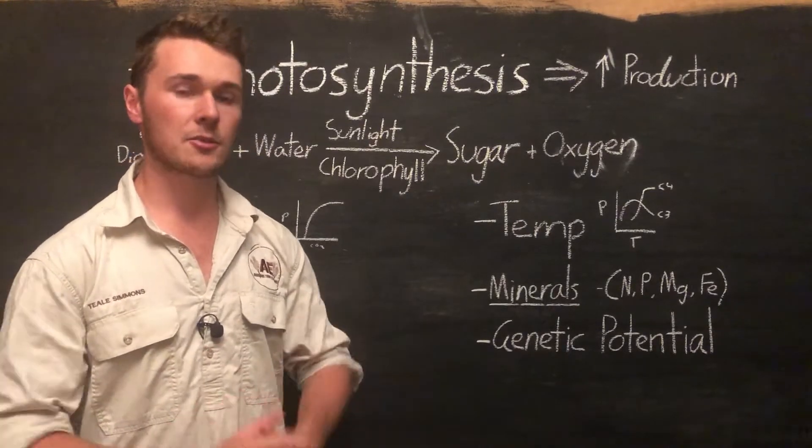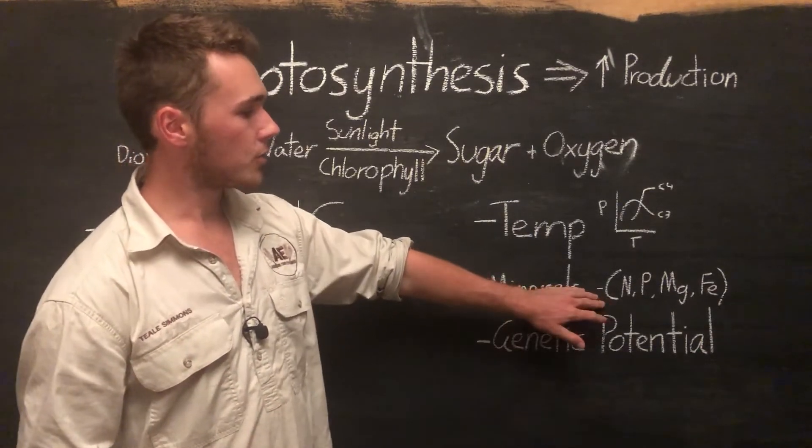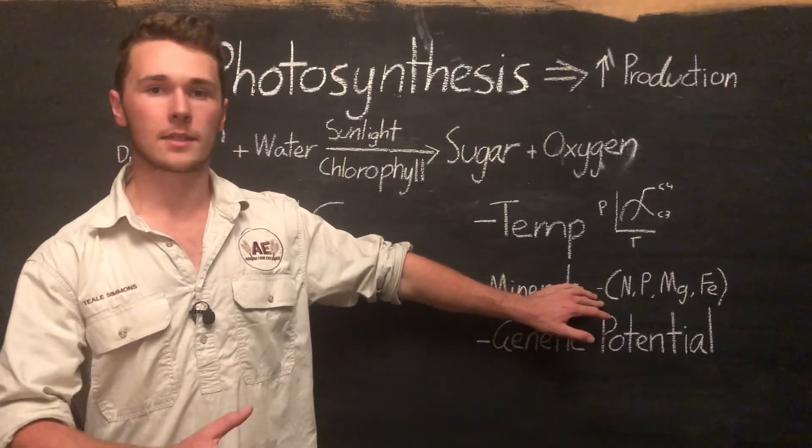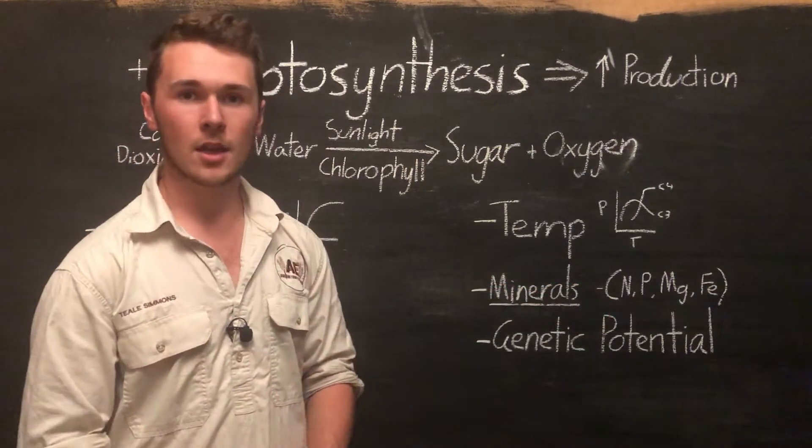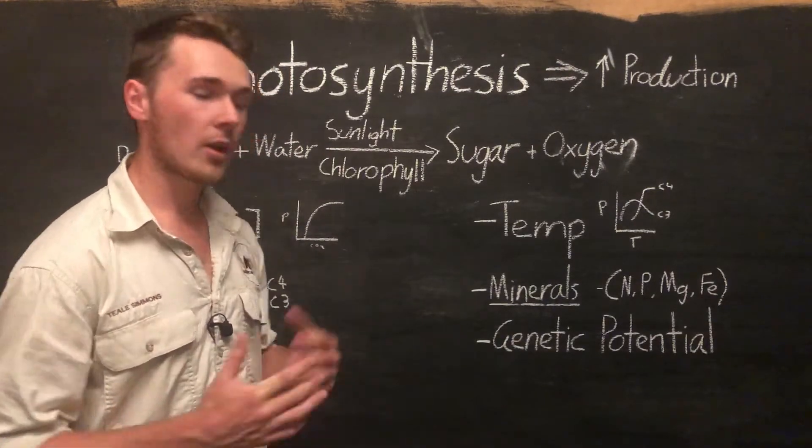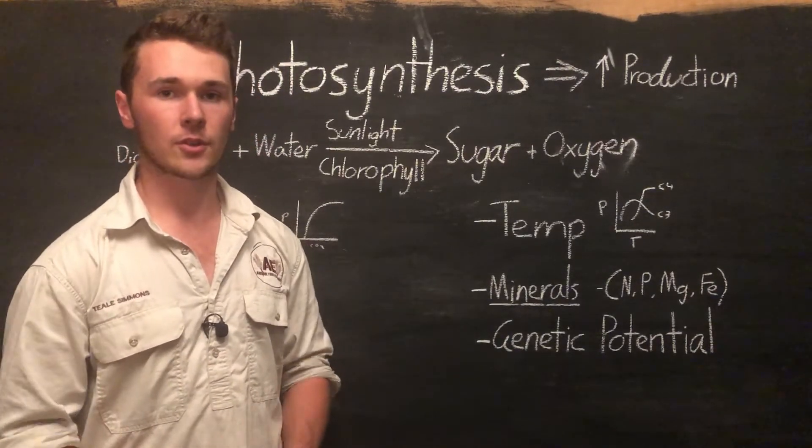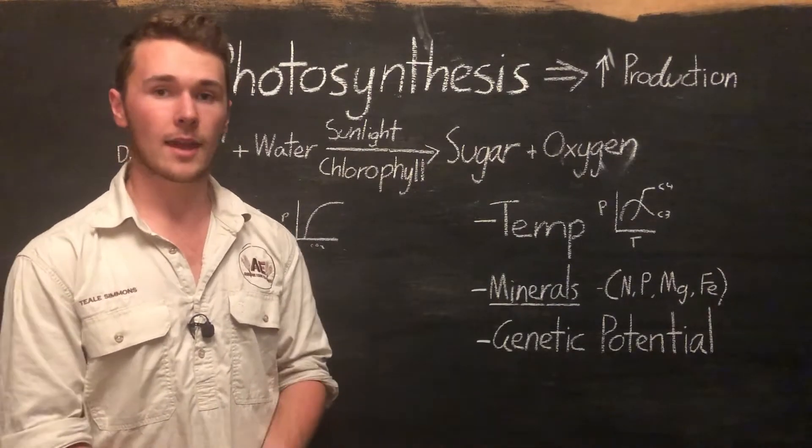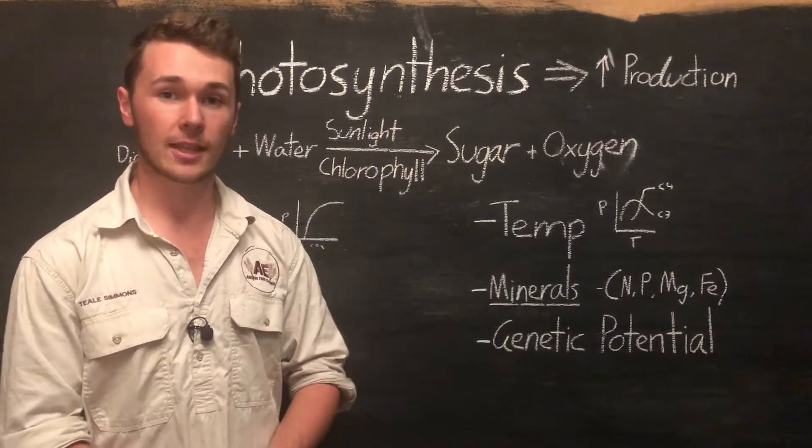The SAP test will tell you the exact nutrients that the plant is picking up. This is different to a soil test, which tells us what is in the soil but not what the plant is picking up. There's a big difference between those two, as some nutrients are in a form that the plant can't pick up or can't utilize when it's absorbed.